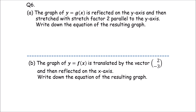Okay, first we have a graph of y equals g of x. What do we need to do? We need to do a reflection on the y-axis. When we need to do a reflection on the y-axis, this is a horizontal transformation. When we need x, we need to do negative x. Then we need y equals g of negative x.